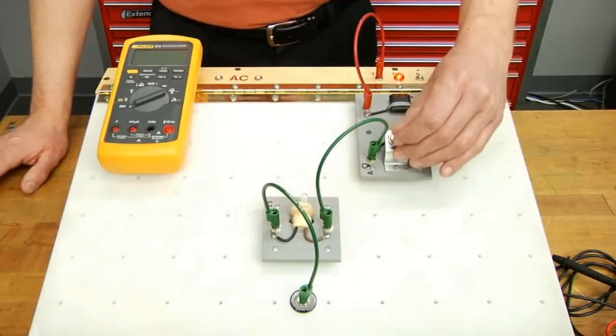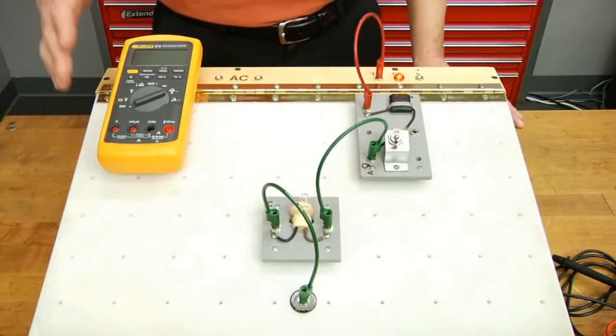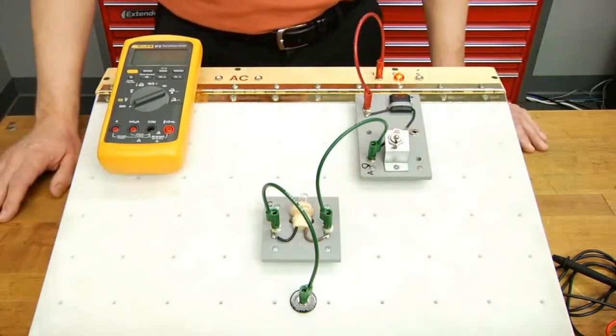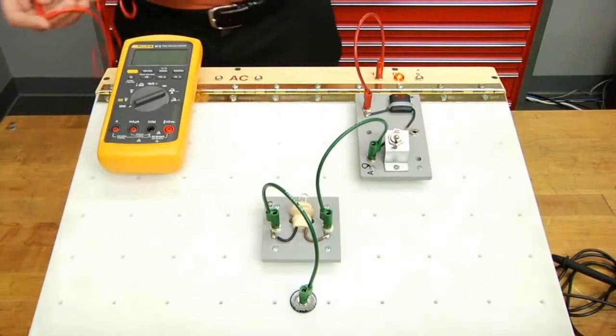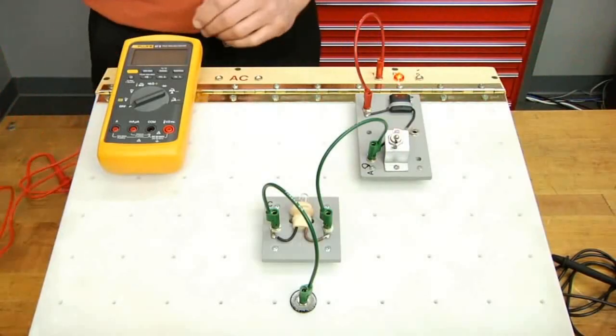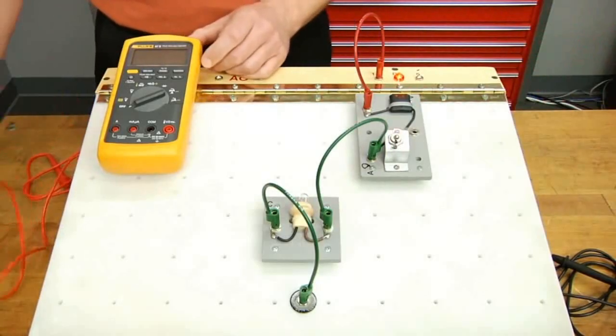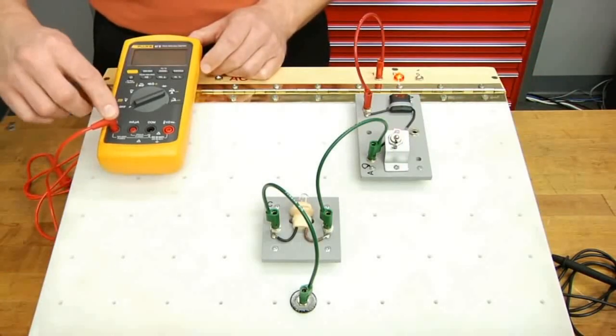First, we'll shut our circuit off to power down. Next, we need to set up our digital multimeter. We'll do that by inserting the leads into the proper terminals. You want to always start by inserting the red lead into the amp terminal.